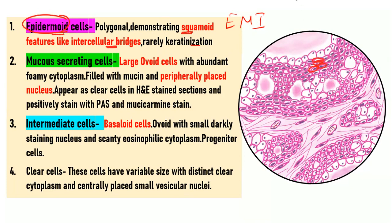The mucous-secreting cells are the largest cells overall — large ovoid cells with abundant foamy cytoplasm filled with mucin, which pushes the nucleus peripherally. On an H&E section they appear clear because mucin is washed away, but they stain positive with PAS and mucicarmine stains, which are stains specific for mucin.